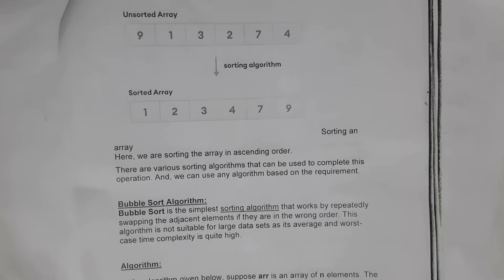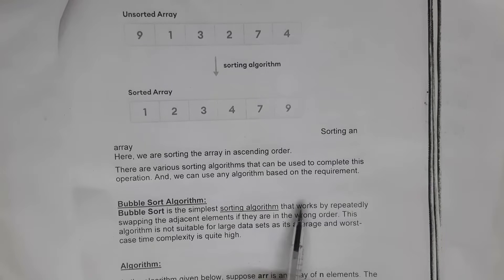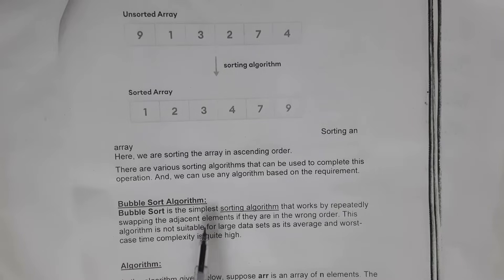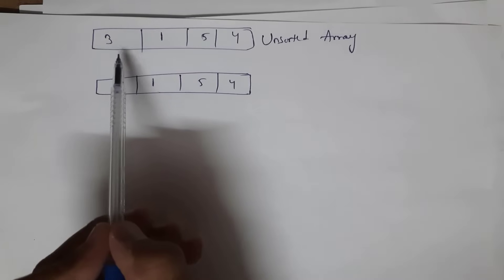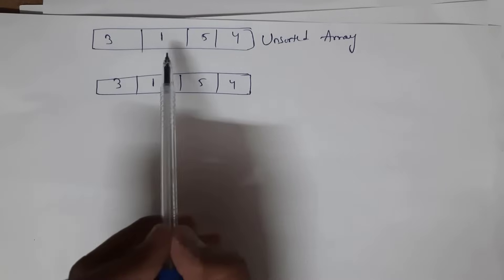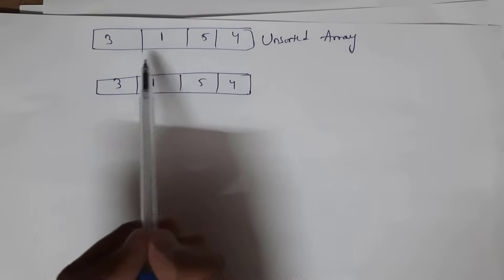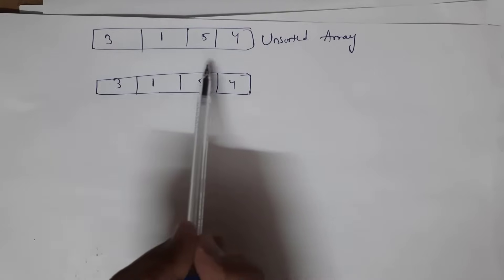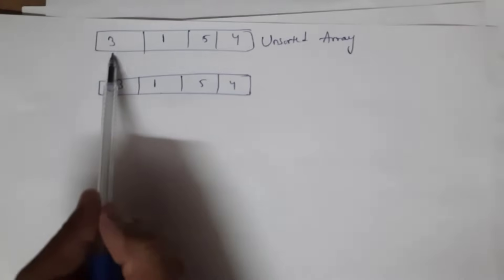Now I will explain the bubble sort algorithm. Bubble sort is the simplest sorting algorithm that works by repeatedly swapping adjacent elements if they are in the wrong order. I will give one example. This is an unsorted array where elements are not arranged in proper order. We need to sort this array using bubble sort, starting from the first position and checking whether elements are in proper order.